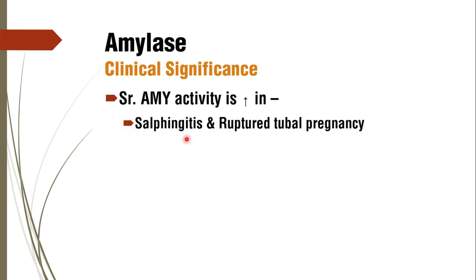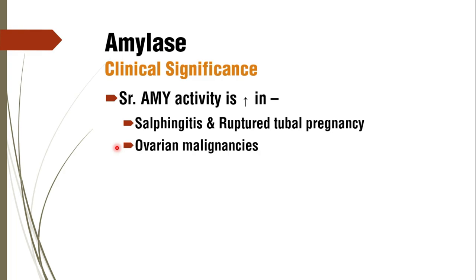Serum amylase is also increased in ruptured tubal pregnancy. The fact that fallopian tubes produce amylase was used in older days to diagnose ectopic pregnancy, before ultrasonographic investigations were available. Ovarian malignancies also show an increase in serum amylase activity.